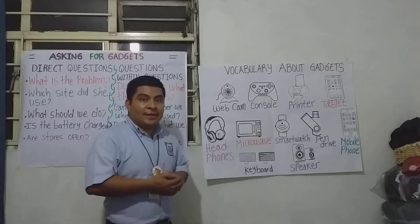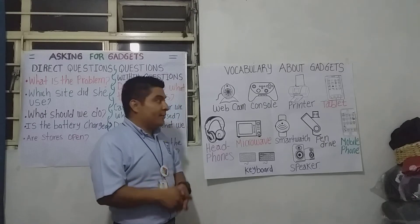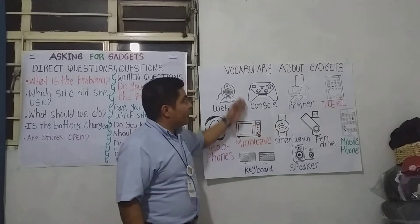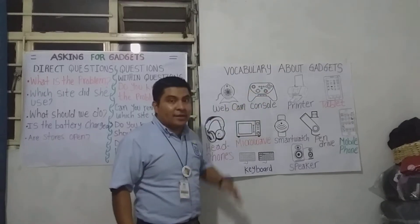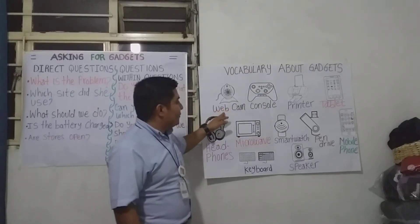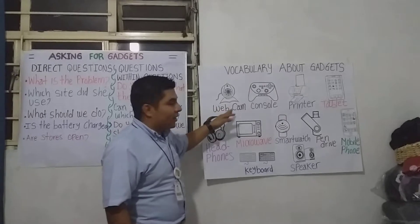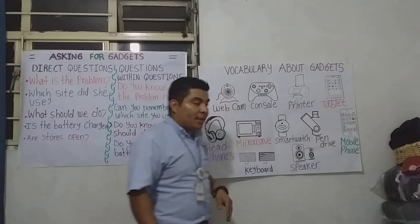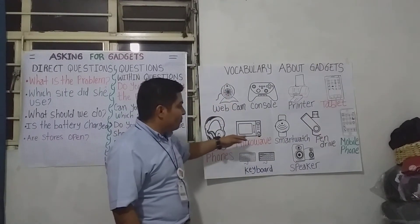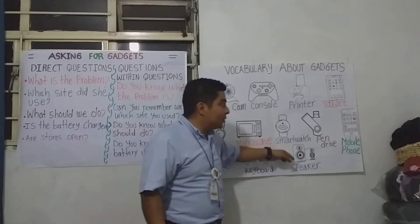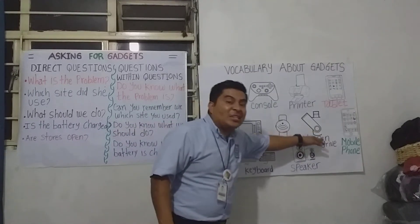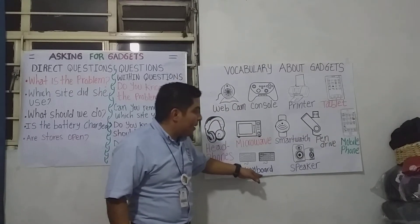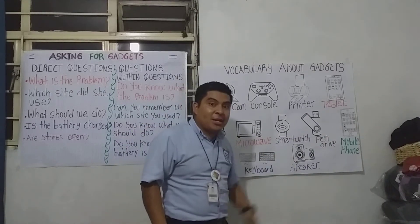The last activity in the platform was about identifying vocabulary related to gadgets. You identified webcam, console, the printer, tablet, headphones, microwave, smartwatch, the pendrive, mobile phone, the keyboard, and speaker.